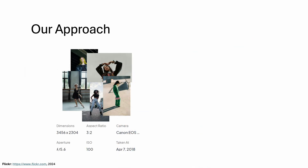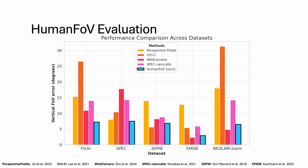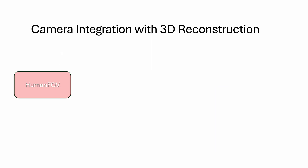Hence, we collected 500K human-centric images with EXIF data and trained our model, HumanFOV, to directly regress field of view from pixels. Evaluation of our HumanFOV model on human-centric benchmarks shows its generalization capabilities across a wide range of focal lengths. The HumanFOV model forms the core of our approach.